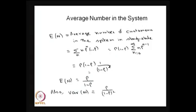If you do a little simplification you will get rho divided by 1 minus rho, where rho is less than 1. This is the average number of customers in the system. One can also get the variance of the number of customers in the system by finding E[n squared] and then using that formula to get the variance. So here we are getting the mean and variance of the number of customers in the system in steady state.